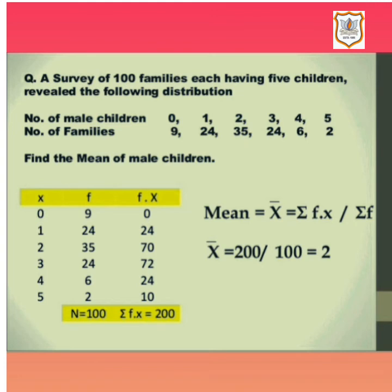The formula for grouped data is Sigma FX upon Sigma F, or n. In the question, number of families is the frequency F, and number of male children is X. So X = 0, 1, 2, 3, 4, 5 and F = 9, 24, 35, 24, 6, 2. We calculate FX: 0×9=0, 1×24=24, 2×35=70, 3×24=72, 4×6=24, 5×2=10. The total of the FX column, Sigma FX, equals 200, and the total frequency n equals 100.